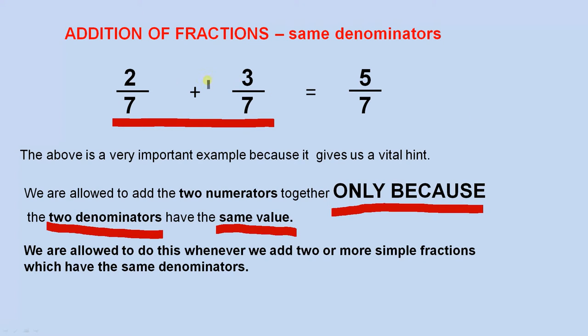So all we do, because the two denominators are the same, we go 2 plus 3 equals 5 and you keep the denominator the same. So the answer is 5 over 7.